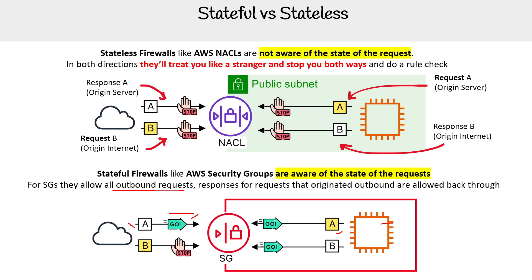Now let's look at the other direction. We have request B coming from the internet — this one gets stopped. It says: are you allowed to enter through the security group? If it is allowed, then the response automatically is allowed to go back out. So hopefully that is very clear. Understand that security groups handle it in that particular way.